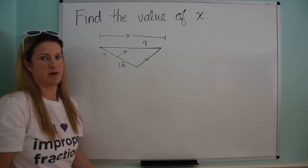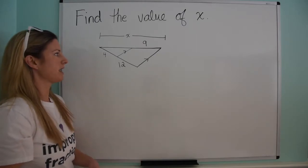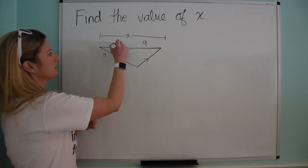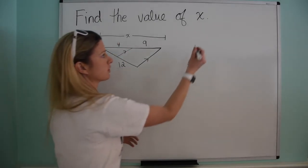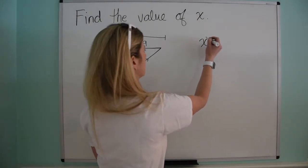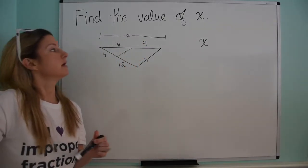So this is a multi-step problem using the side splitter theorem. So why don't I for now call this y? Because I know, and I'll just write over here, that x, or sorry, not x...